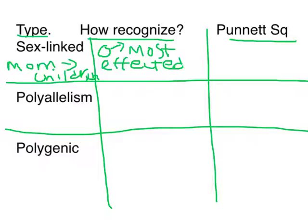On a Punnett Square you're still doing the two by two, but don't forget that you label the X chromosome and you don't label the Y chromosome. These traits are carried on the X chromosome, so the X chromosome gets letters but the Y does not.